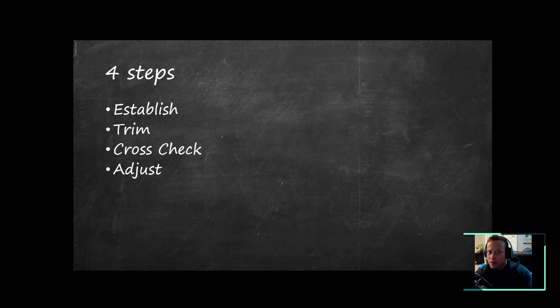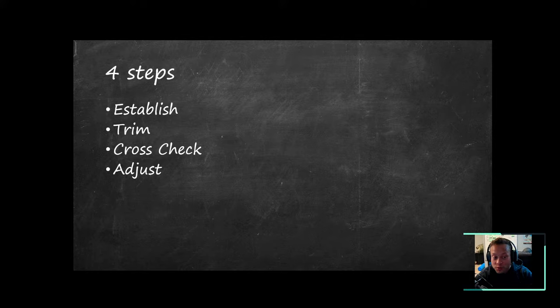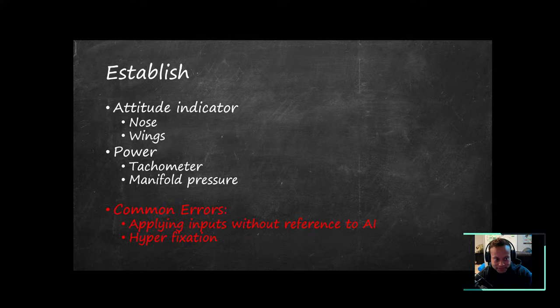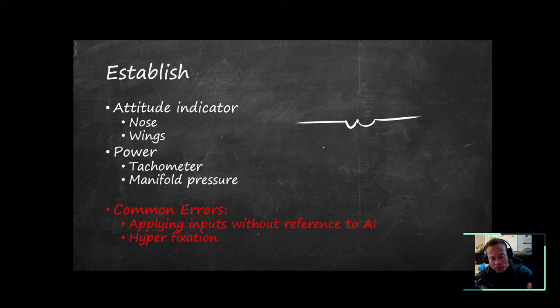How do we fly in the clouds? There are four steps. We want to establish the aircraft, then trim off those pressures so we can fly hands off, do a cross-check to confirm the airplane is doing what we want, and finally adjust to fine-tune. To establish: fly that attitude indicator. Put your nose on the horizon, wings level, and the aircraft should theoretically fly straight and level.